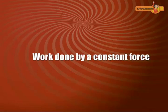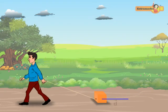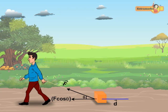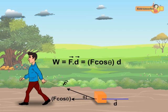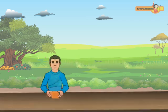Work done by a constant force: a boy applies a force F to drag a block of mass M. The displacement D of the block is not in the direction of the force applied, so we consider only the component of force along the direction of displacement. Let theta be the angle between the applied force and the displacement. The component of force along the displacement is F cos theta, and the work done is the product of F cos theta and D.